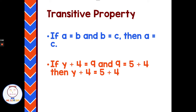The transitive property is like a chain of thoughts. If A equals B and B equals C, then A must equal C. It's like a chain of events that triggers. For example, if Y plus 4 equals 9, and 9 equals 5 plus 4, then from the transitive property, Y plus 4 has to equal 5 plus 4.